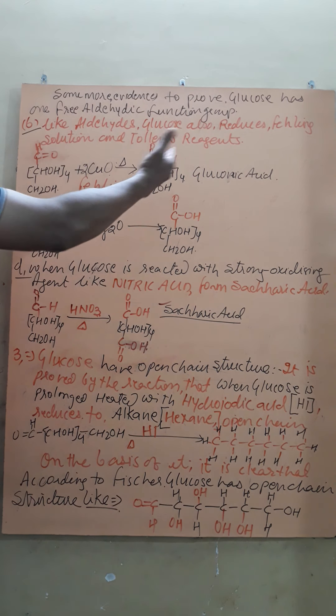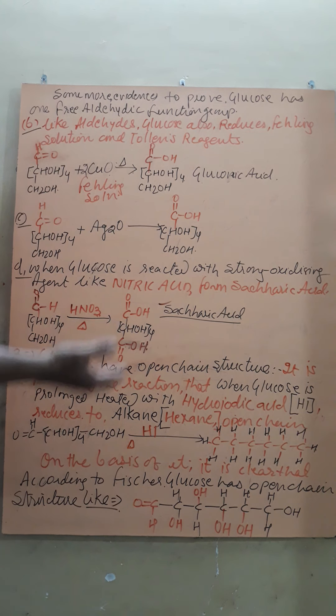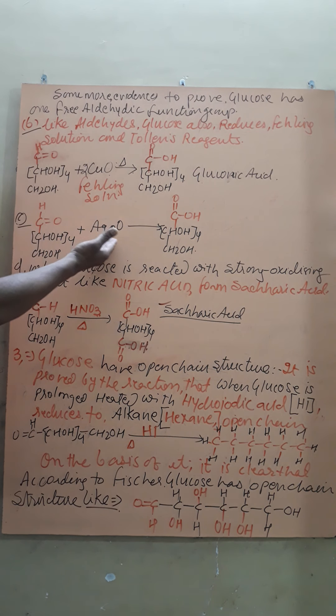Glucose converts to gluconic acid and also reduces Tollen's reagent to gluconic acid. It shows that glucose has actually one free aldehyde group which converts into carboxylic acid after oxidation, or we can say by the reduction of Tollen's reagent.